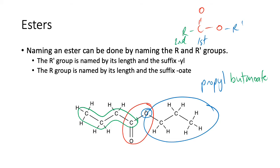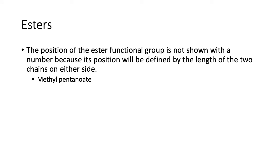The position of the ester functional group is not shown with a number because its position will be defined by the length of the two chains on either side. Effectively, wherever that COO group is, you work it out by the fact that you're telling it, for example, it's a methylpentanoate, which means it'll have one carbon on one side and five on the other.